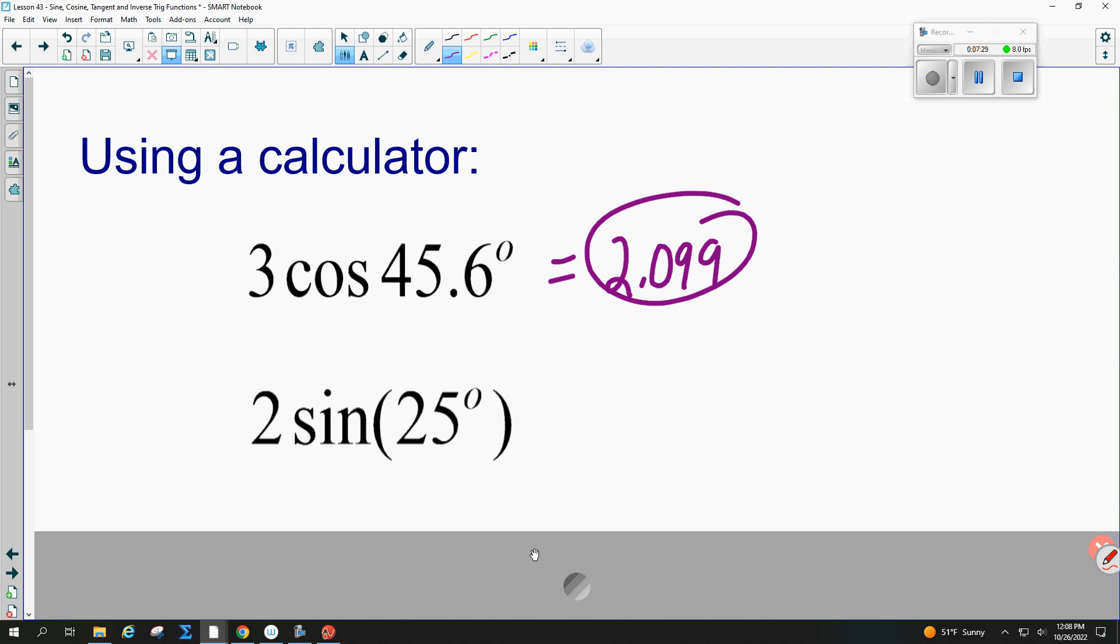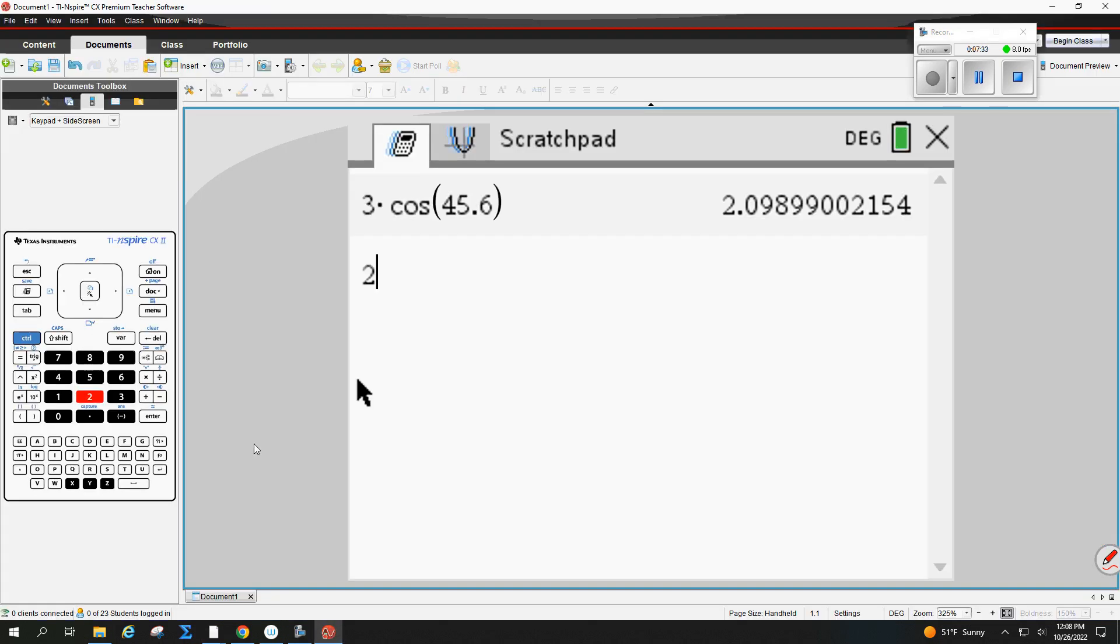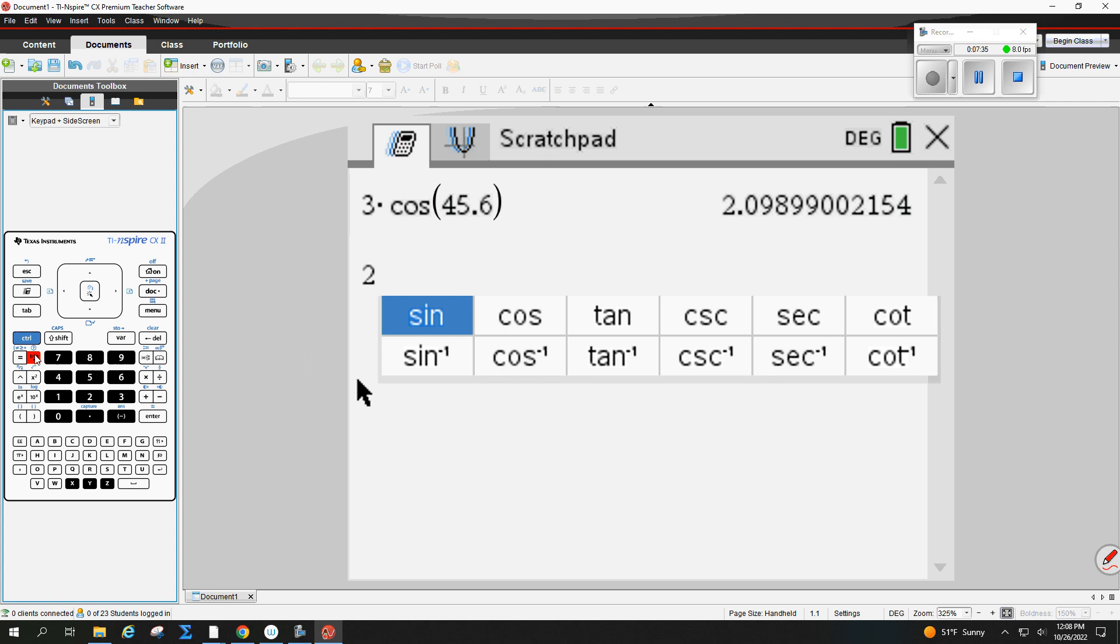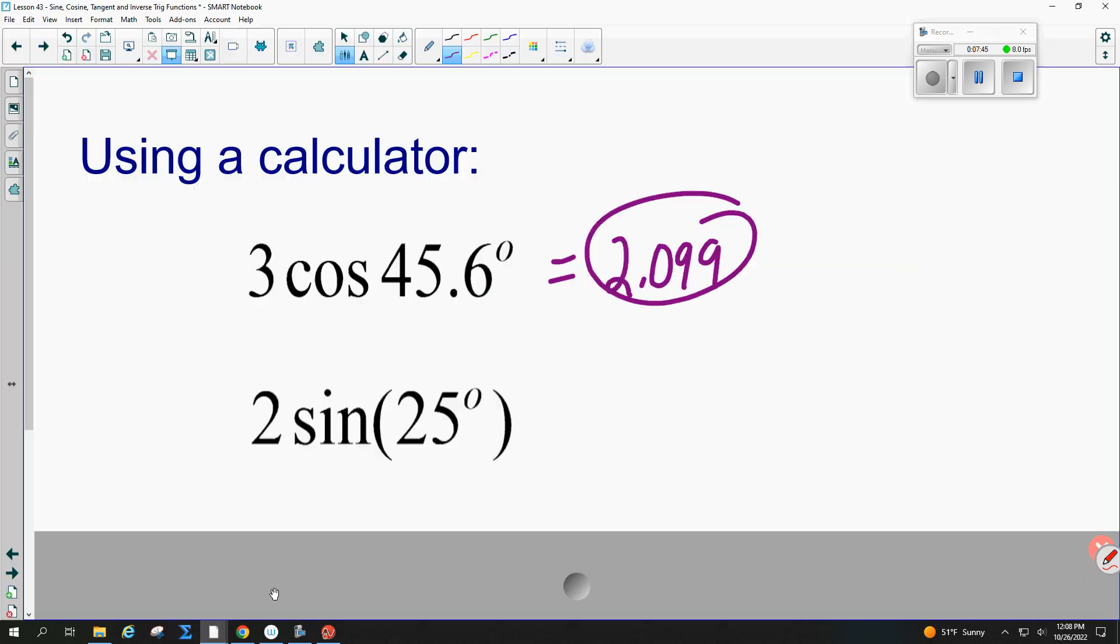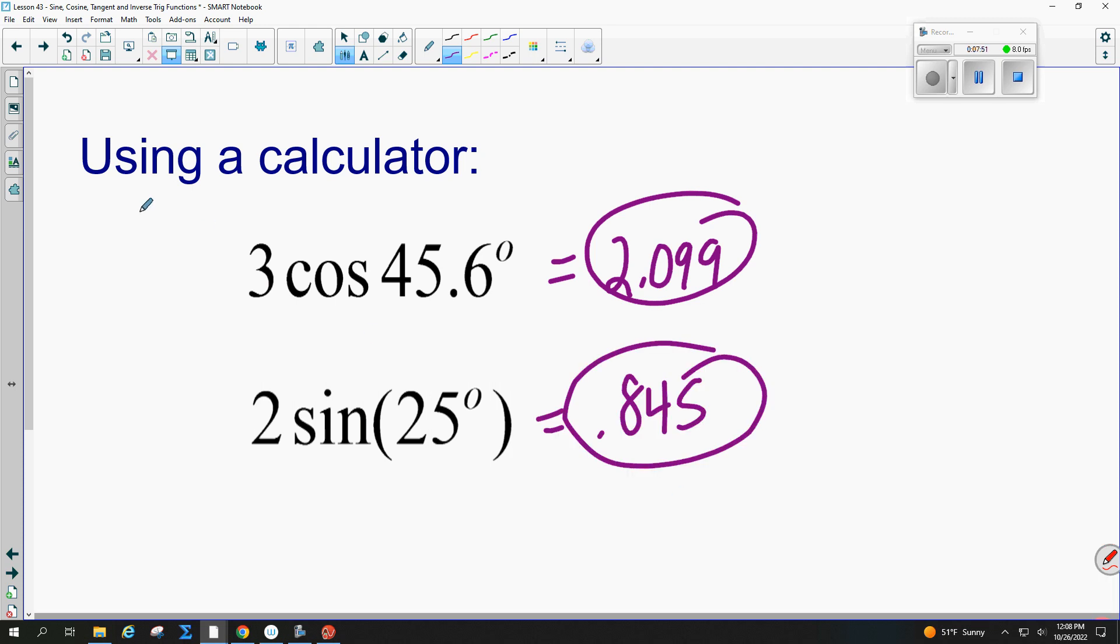Let's try another one. 2 sine 25. So we're going to plug in 2, we go to trig, do sine, not the one with the negative one. And it was 25, right? 0.845. And you write that down.